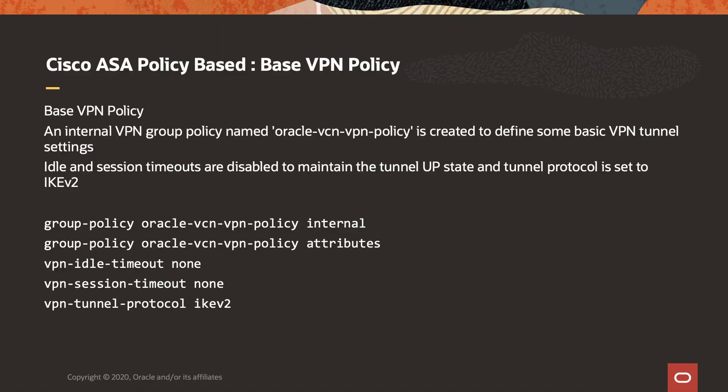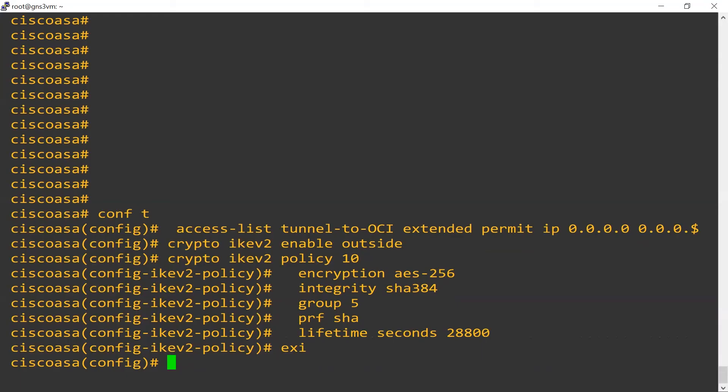Next we'll build a group policy. For policy-based VPNs, they expect real traffic to make the tunnel persistent and keep it up. To help with that, we're going to set some timeout settings to be non-zero. We're also going to specify that we're using the IKE version 2 protocol, so we'll add that to this group policy.